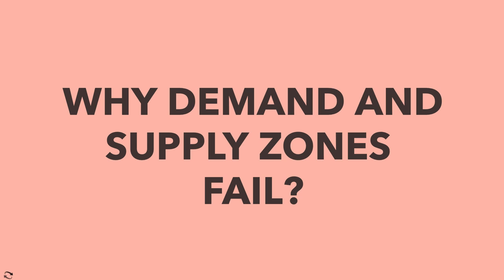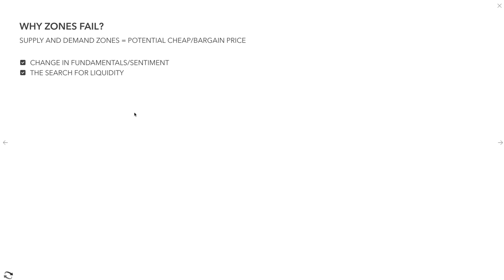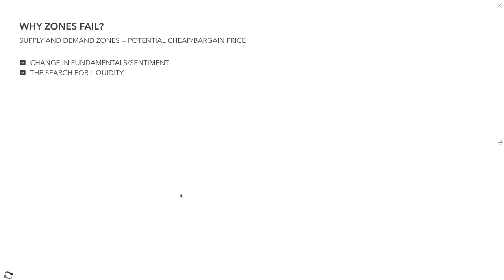It's a probabilities game, so why even try to figure out when a zone is going to turn? It's just understanding the likelihood of one thing happening over another. So let me get into why zones fail specifically from my knowledge. First things first, what you need to understand is that supply and demand zones are potential bargain or cheaper prices. I'm not an advocate of the 'rally-base-drop, drop-base-rally' narrative because it doesn't really tell you anything about value and buying low and selling high.